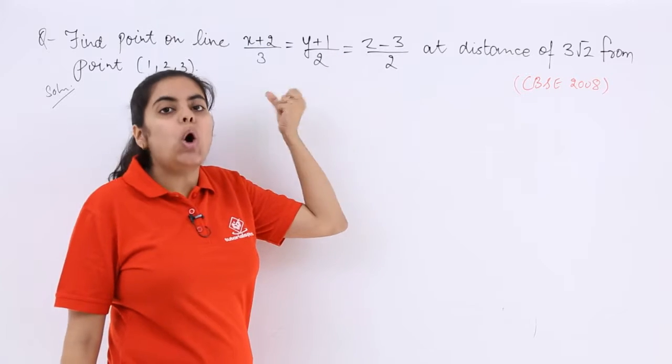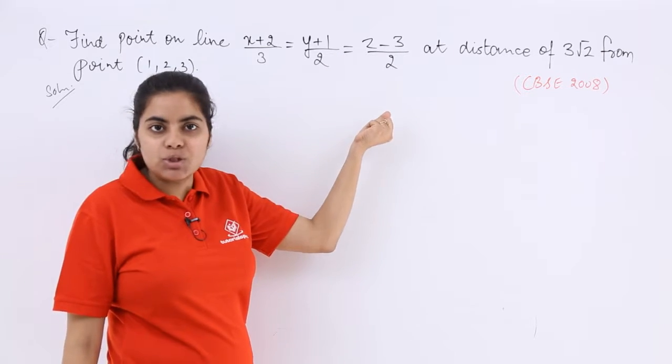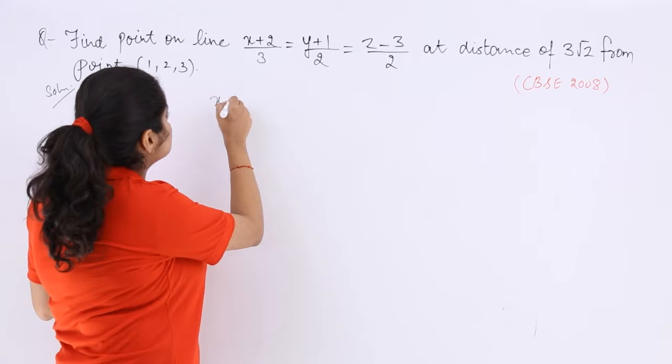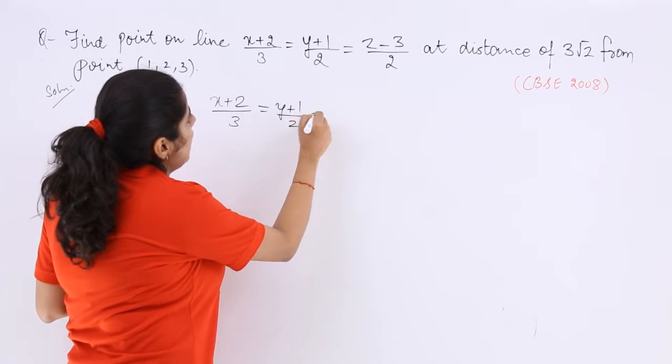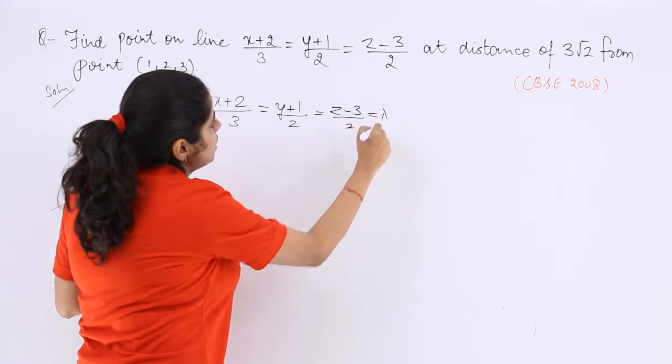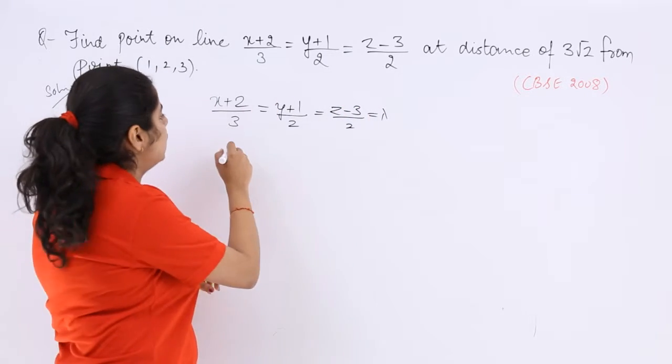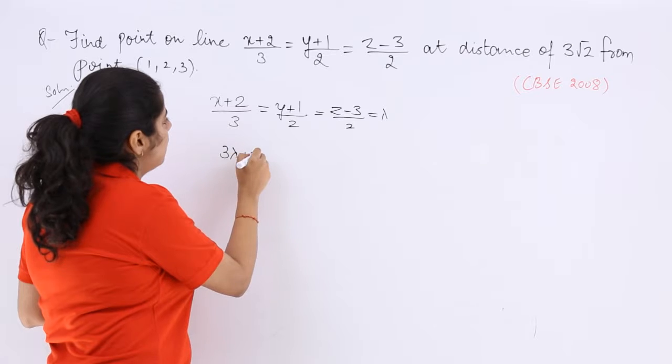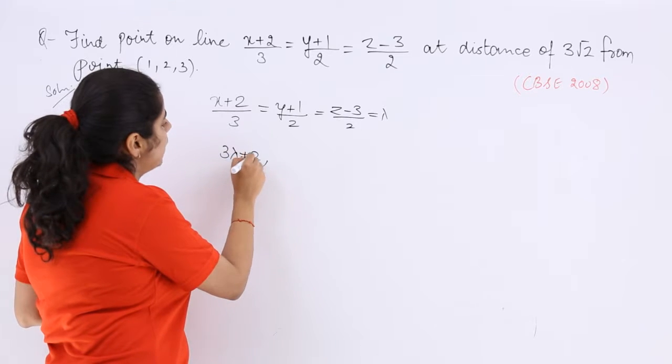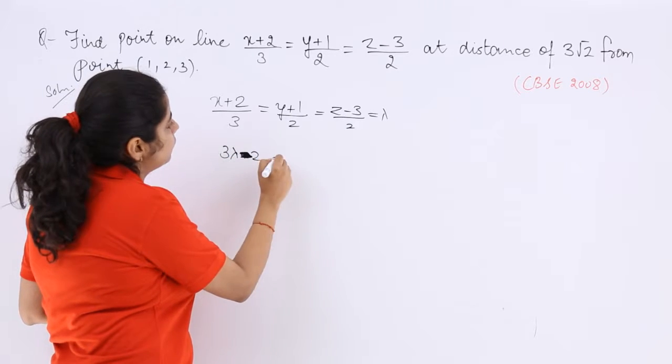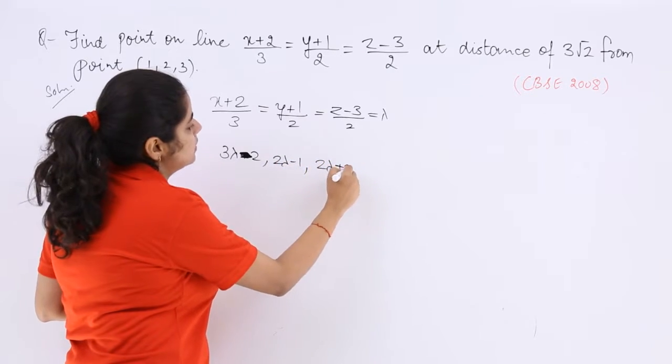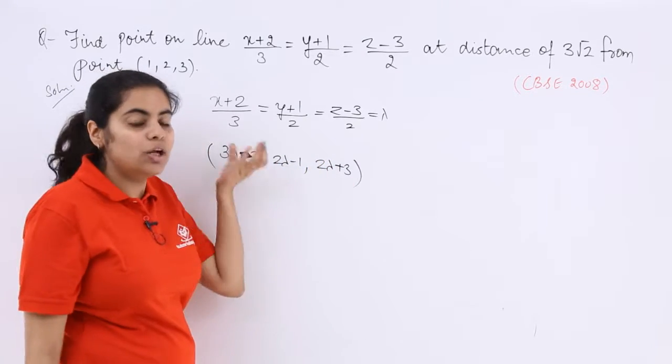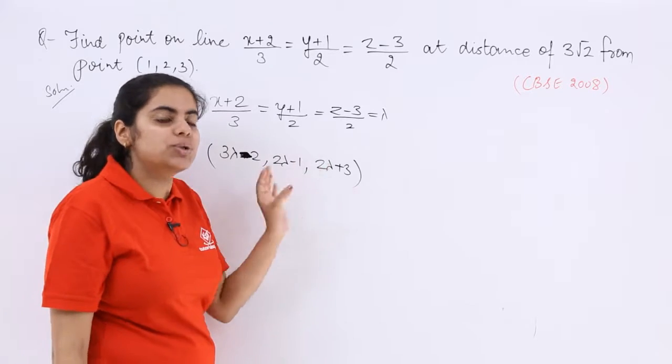Now any point on this line can be found out by equating this with lambda and then solving it further. So coordinates of any point on this line are 3 lambda minus 2, 2 lambda minus 1 and 2 lambda plus 3. So these are the line coordinates of any point on this line.